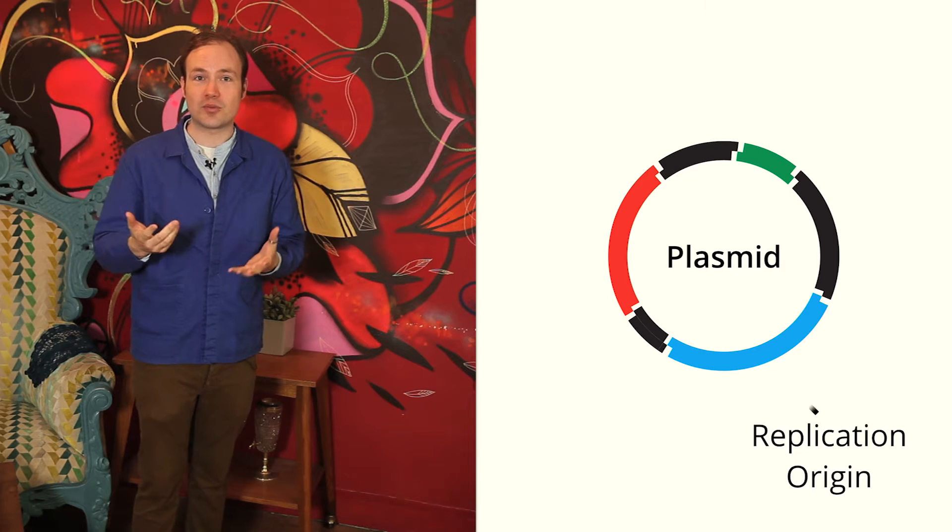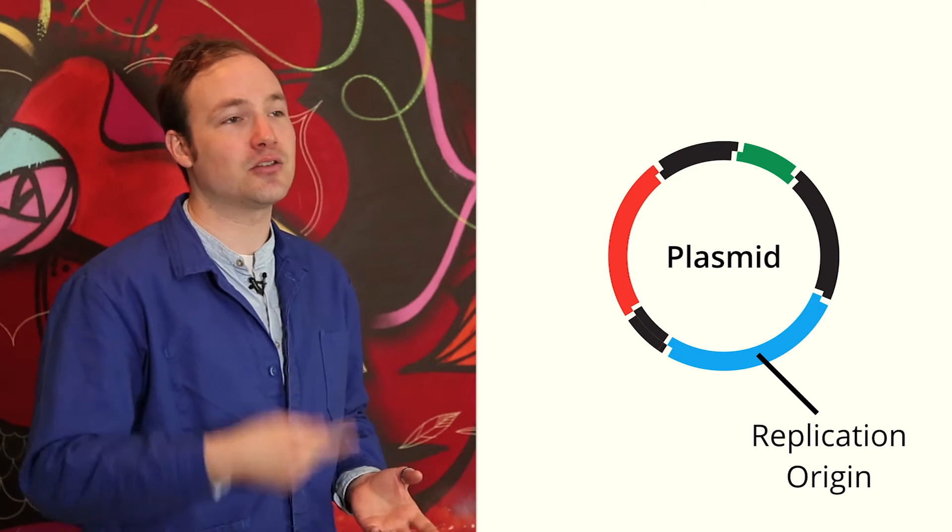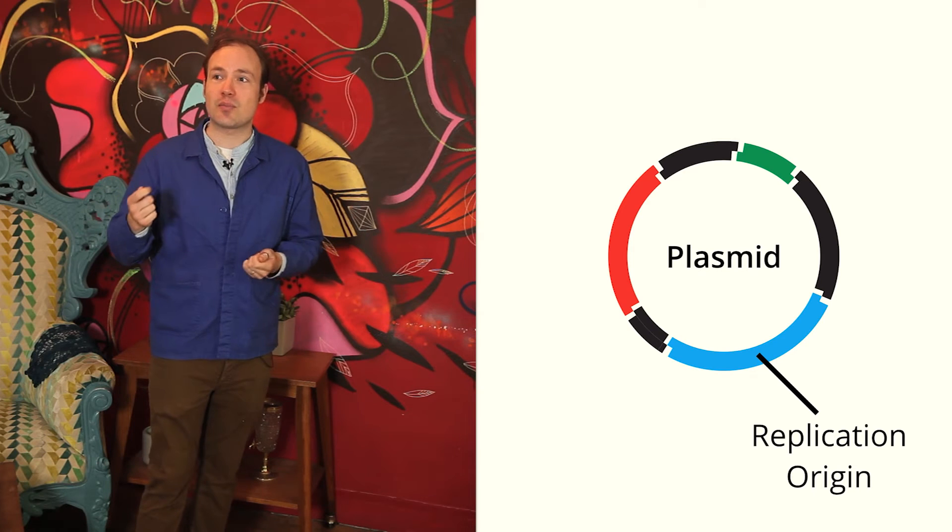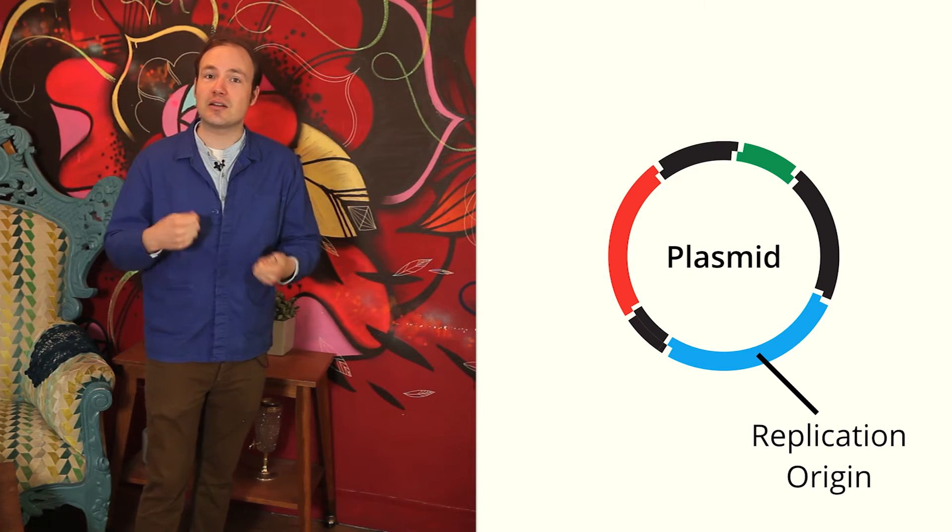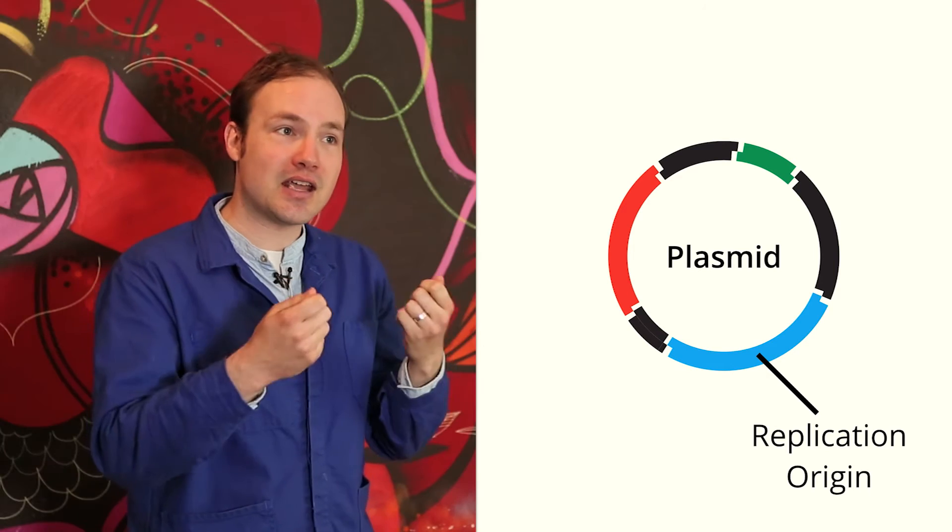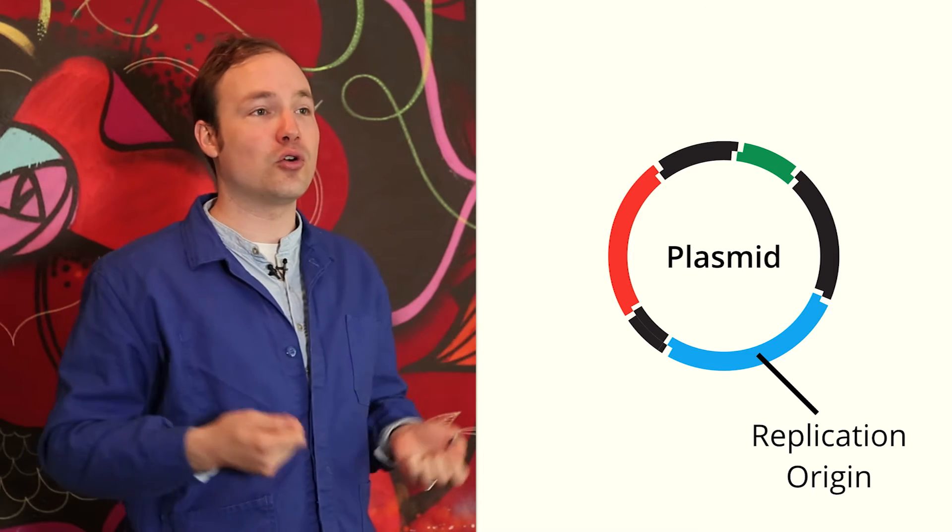First, the origin of replication. The replication origin is a DNA sequence that tells the bacteria to start copying that strand of DNA. DNA replication is a complex process, but luckily, very little of that complexity is coded in the plasmid DNA. Instead, the replication origin draws on the replication machinery of the host cell.